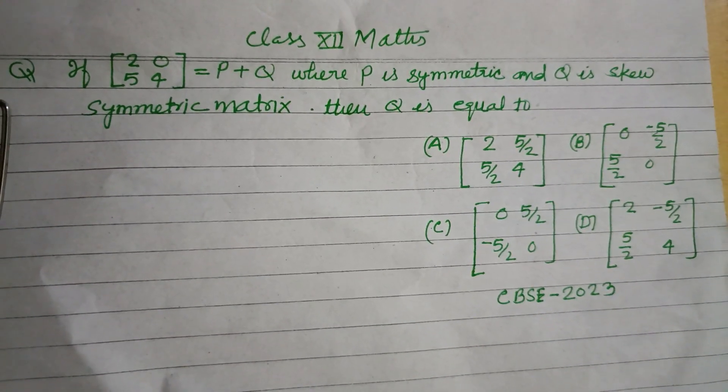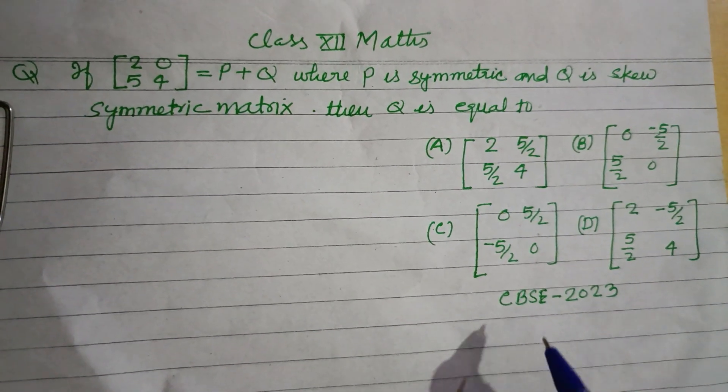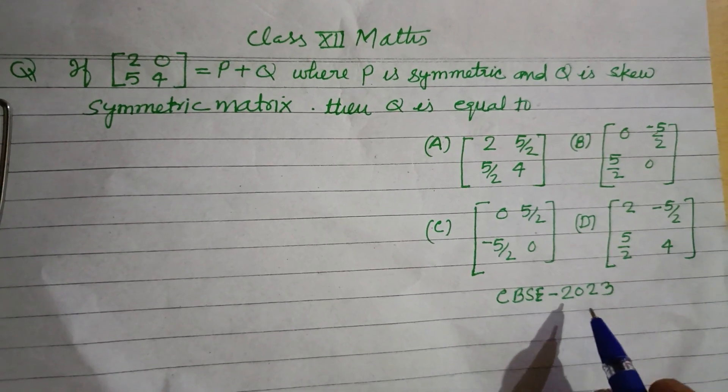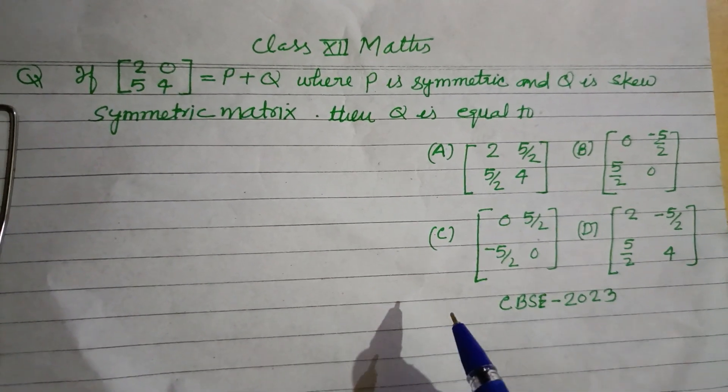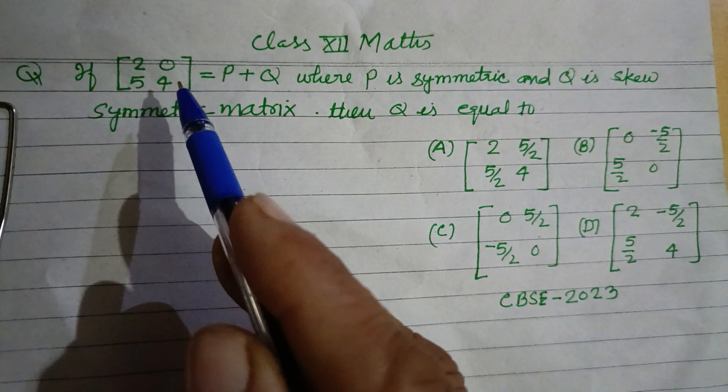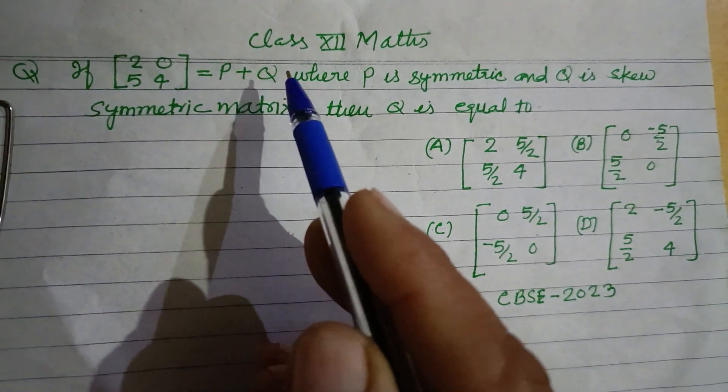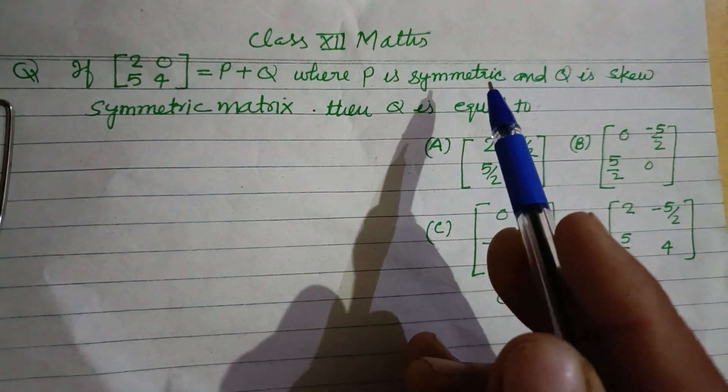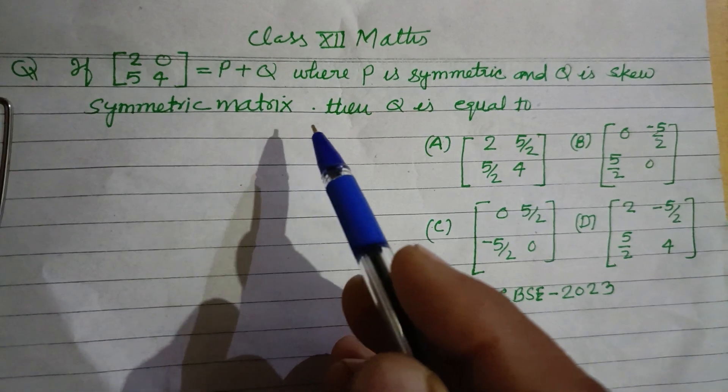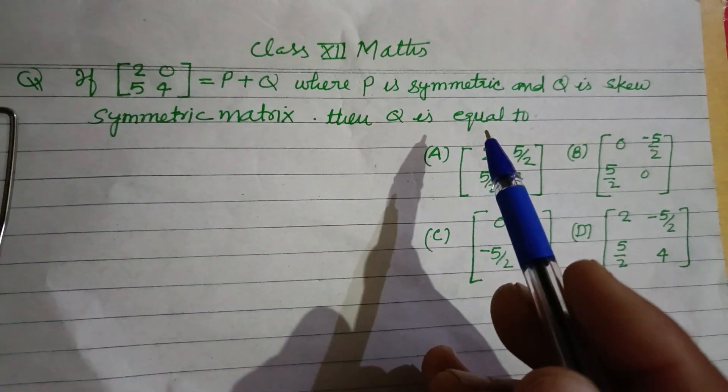Hello dear students, welcome to this YouTube channel. This is a question from CBSE board exam 2023 based on matrices. If the matrix [2 0; 5 4] equals P plus Q, where P is a symmetric matrix and Q is a skew symmetric matrix, then Q is equal to: